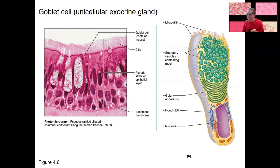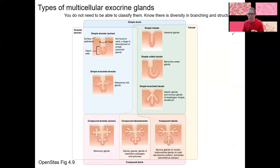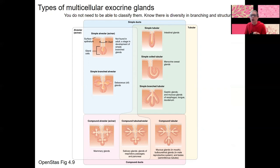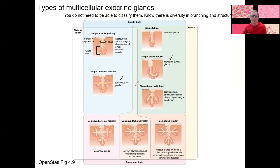Multicellular glands use those two tissue types. There are all these different types, but you don't need to memorize them. We will see a couple of types as we go: sebaceous glands, which are oil glands in the skin, and merocrine sweat glands. We'll see intestinal glands in the spring. You don't need to classify all these types — I just want you to know there is diversity in the branching and structure of glands.